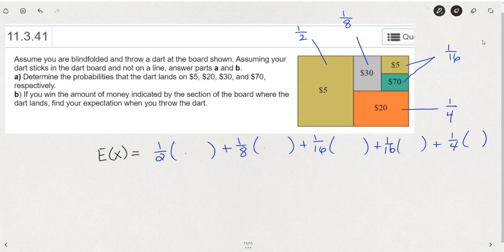This is an excellent example of expected value. What we have is a dartboard that's a rectangle, and when the dart hits the board, you win or you're awarded the amount where the dart landed.